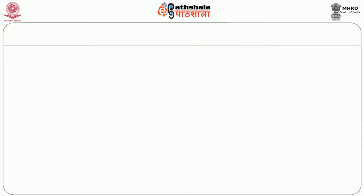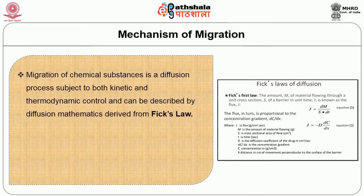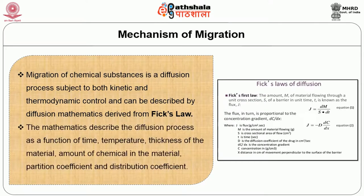Let us start with the mechanism of migration. Migration of chemical substances is a diffusion process subject to both kinetic and thermodynamic control and can be described by diffusion mathematics derived from Fick's law. The mathematics describes the diffusion process as a function of time, temperature, thickness of the material, amount of chemical in the material, partition coefficient and distribution coefficient.